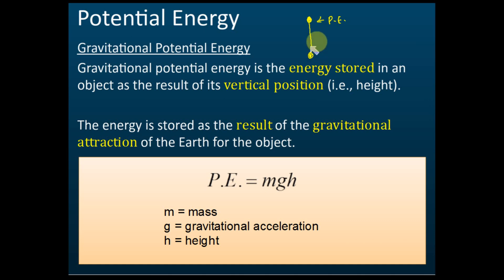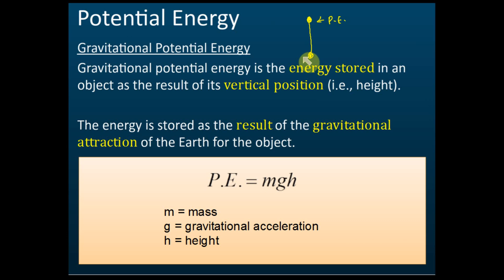Potential energy is due to the vertical position of an object. If you change the vertical height of an object, the potential energy will change. If you move it to a higher level, it will gain potential energy, and if you move it from a higher place to a lower place, it will lose potential energy. Higher position means higher gravitational potential energy, lower position means lower gravitational potential energy.